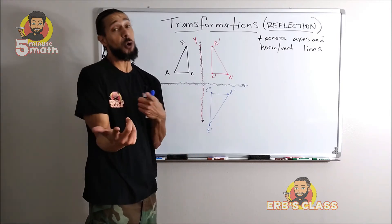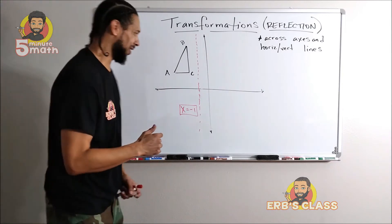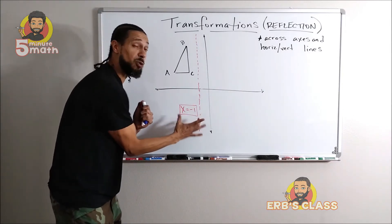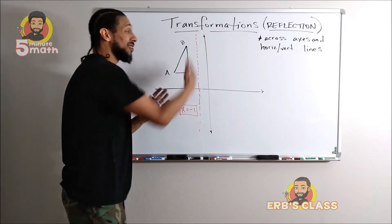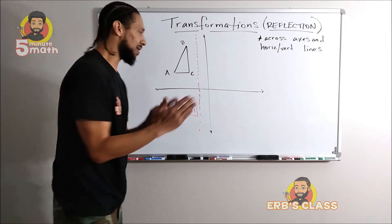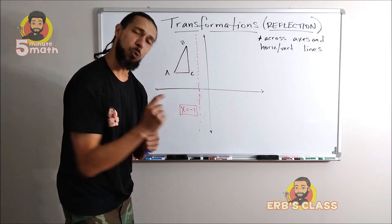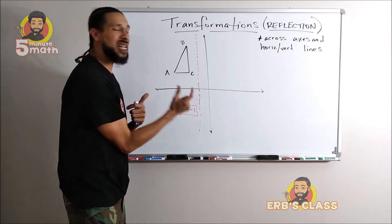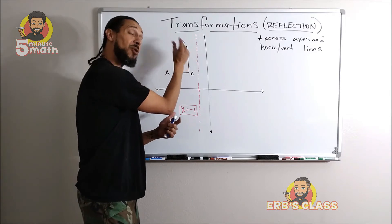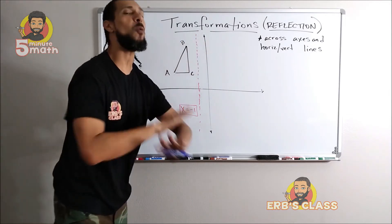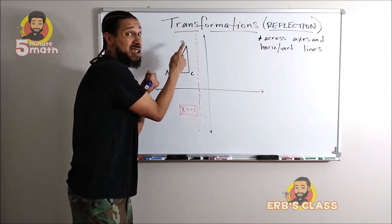The axes are not the only things I can reflect across — I can reflect across other horizontal and vertical lines, like this vertical line with the equation x equals negative one. This isn't the y-axis, but it's still a vertical line. The reflection will still show up on the other side of my mirror, and the distance rule stays the same. I'll count how many spaces B is from this mirror and repeat that same number of spaces on the other side, no matter where the mirror is. So B prime will be right here.